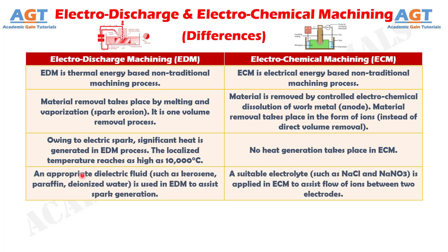Difference No. 4: An appropriate dielectric fluid, such as kerosene, paraffin, or deionized water, is used in Electro-Discharge Machining to assist spark generation, whereas a suitable electrolyte, such as sodium chloride and sodium nitrate, is applied in Electro-Chemical Machining to assist the flow of ions between the two electrodes.